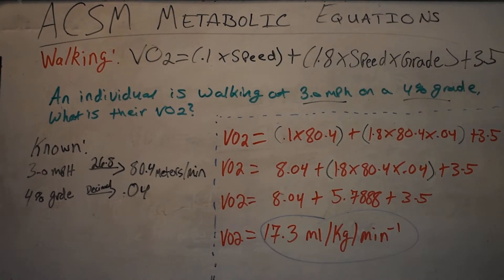Typically what I do and what I have my students do for the very first step is write down what your known numbers are. We know, for example, that this individual is walking at 3 miles per hour and we know that they're walking on a 4% grade.